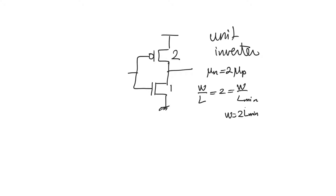The unit inverter is of interest because it is a reference point. We will always refer the resistance of any path to the resistance of the unit inverter. The resistance of the pull-down path in the unit inverter is R0. The resistance of the pull-up path is 2R0/2, which is also R0. So it will always have a resistance of R0.